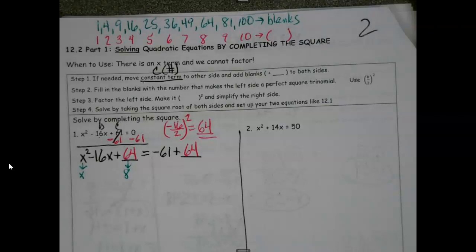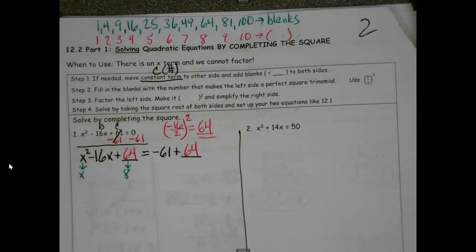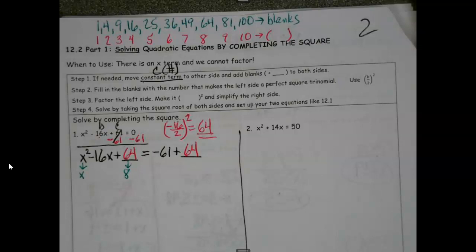Quick synopsis: what have we done here? Job number one - get your x's on the side by themselves with a blank. Whatever, if I had to move something to the other side, it gets the same blank. We have our little formula: take the number in front of x, your b value - labeling it is probably a good idea - divide it by 2, same every time giving negative 8, then square it. That number will always be positive. Put it in the blank on both sides.